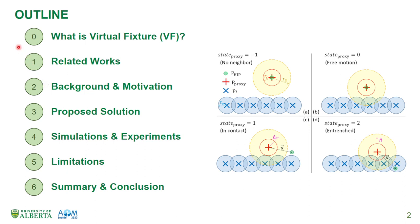This presentation includes seven parts. Number 0 is a brief introduction about what is virtual fixture. Number 1 is related works. Number 2 is background and motivation. Number 3 is our proposed solution. Number 4, simulations and experiments. Number 5, limitations. Number 6, summary and conclusion.